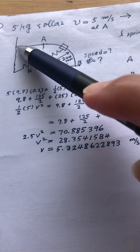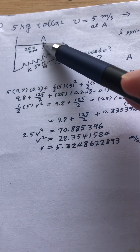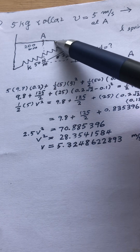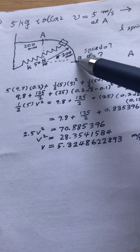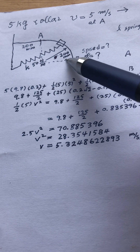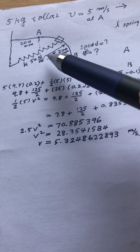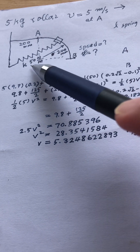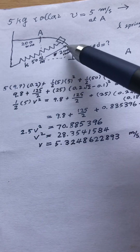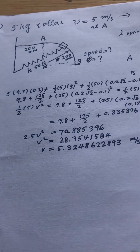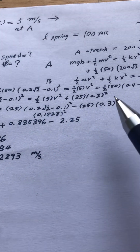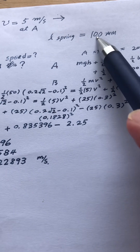The spring constant is 50 Newtons per meter. The dimensions are given: this length is 200 millimeters, and this is a circular path with a radius of 200 millimeters. The natural length of the spring is 100 millimeters.